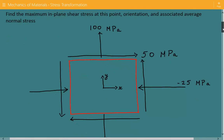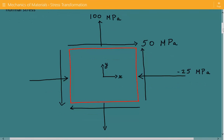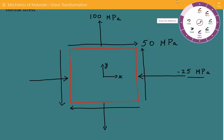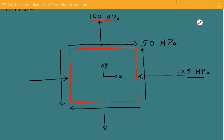Here is our differential plane stress element. We have a compressive stress — a negative compressive stress in the x direction equal to negative 25 MPa. We have a positive tensile stress in the y direction equal to 100 MPa, and then we have a positive shear stress equal to 50 MPa.